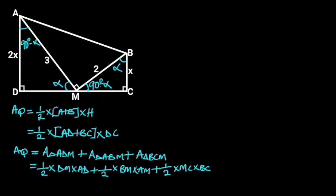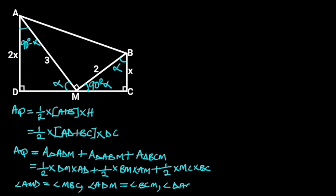Comparing triangle ADM and triangle BCM: observe that angle AMD is equal to angle MBC, angle ADM is equal to angle BCM, and angle DAM is equal to angle BMC. This shows that triangle ADM is similar to triangle BCM.